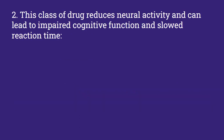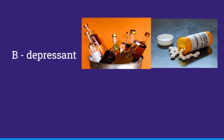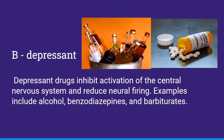This class of drug reduces neural activity and can lead to impaired cognitive function and slowed reaction time. Options: stimulant, depressant, narcotic, opiate, hallucinogen. And this is B, depressant. Depressant drugs inhibit activation of the central nervous system and reduce neural firing. Examples include alcohol, benzodiazepines, and barbiturates.